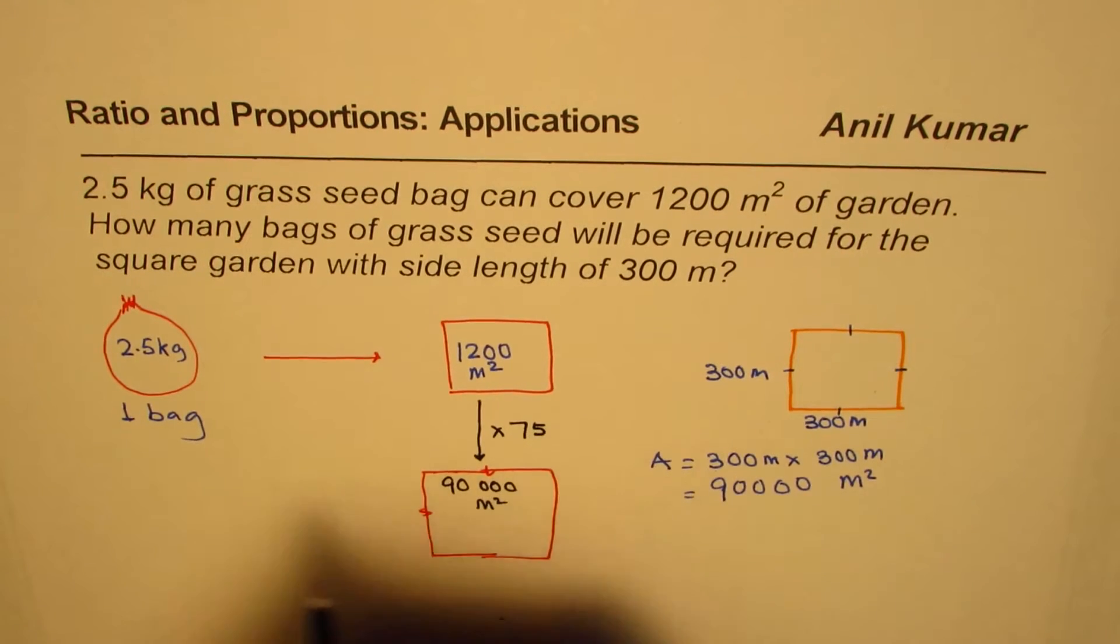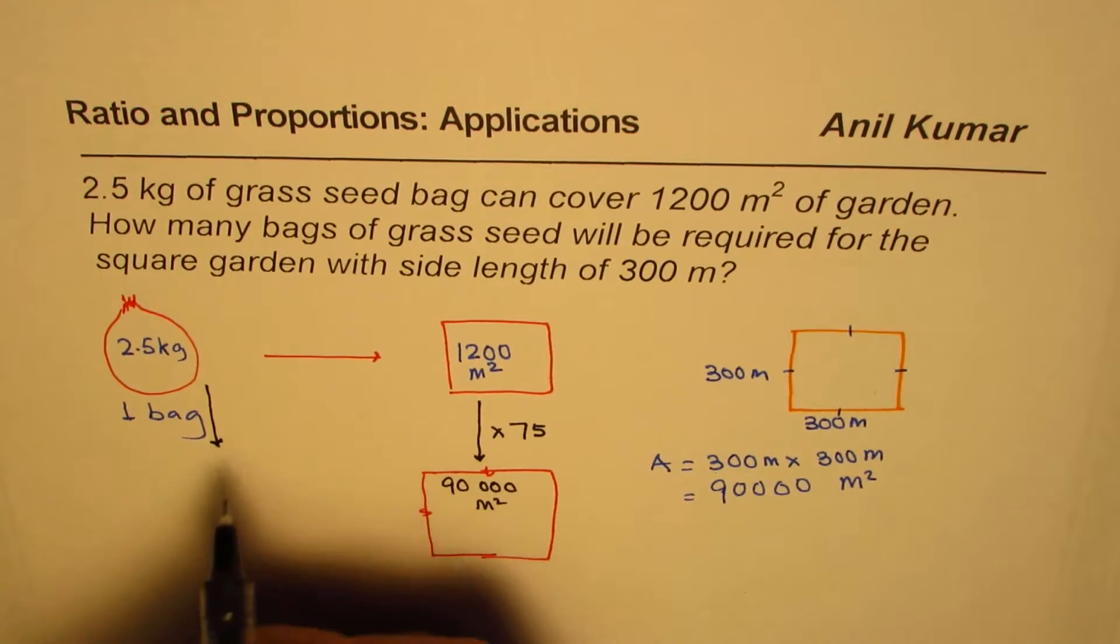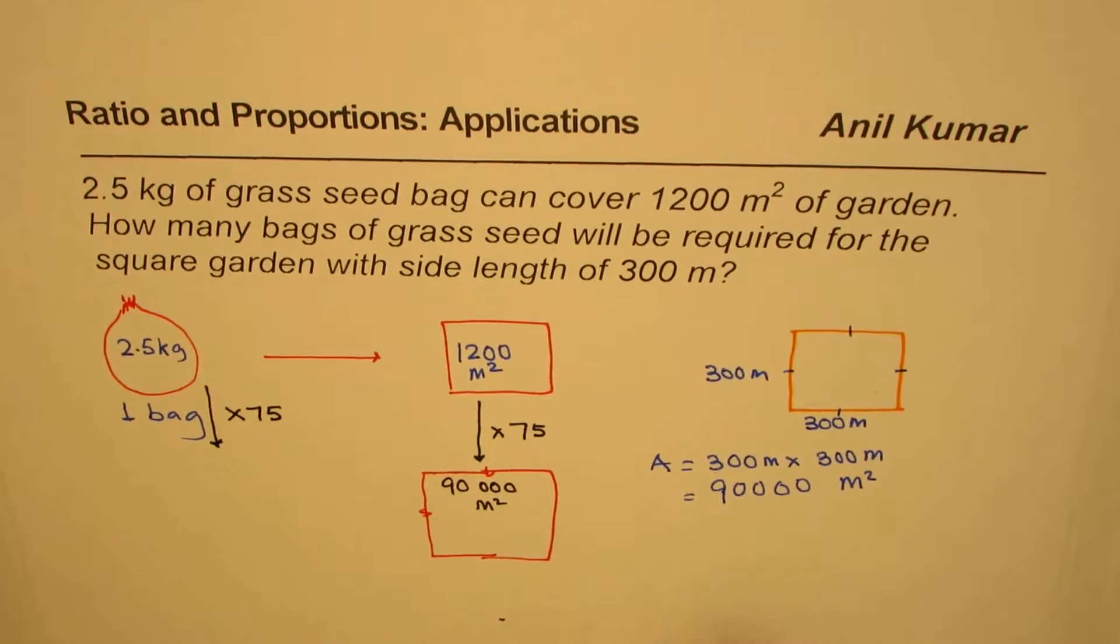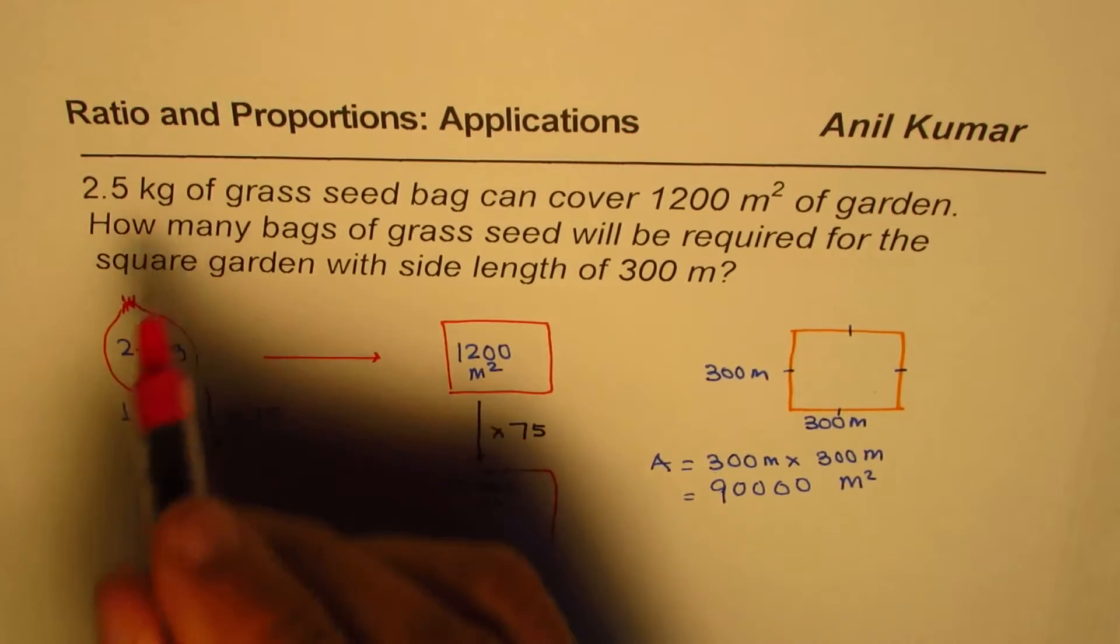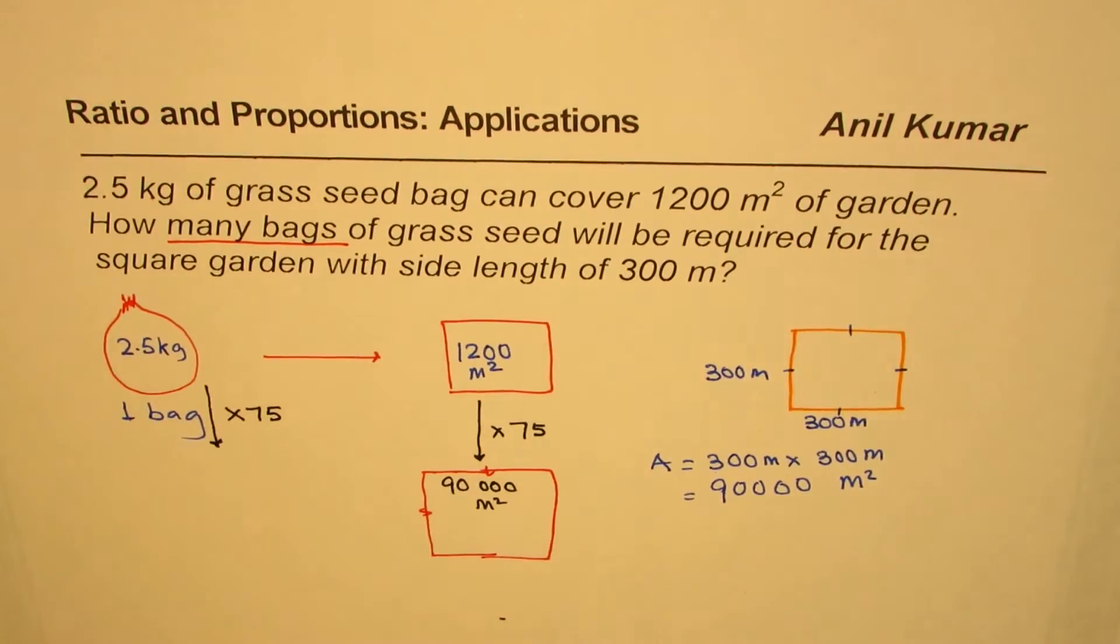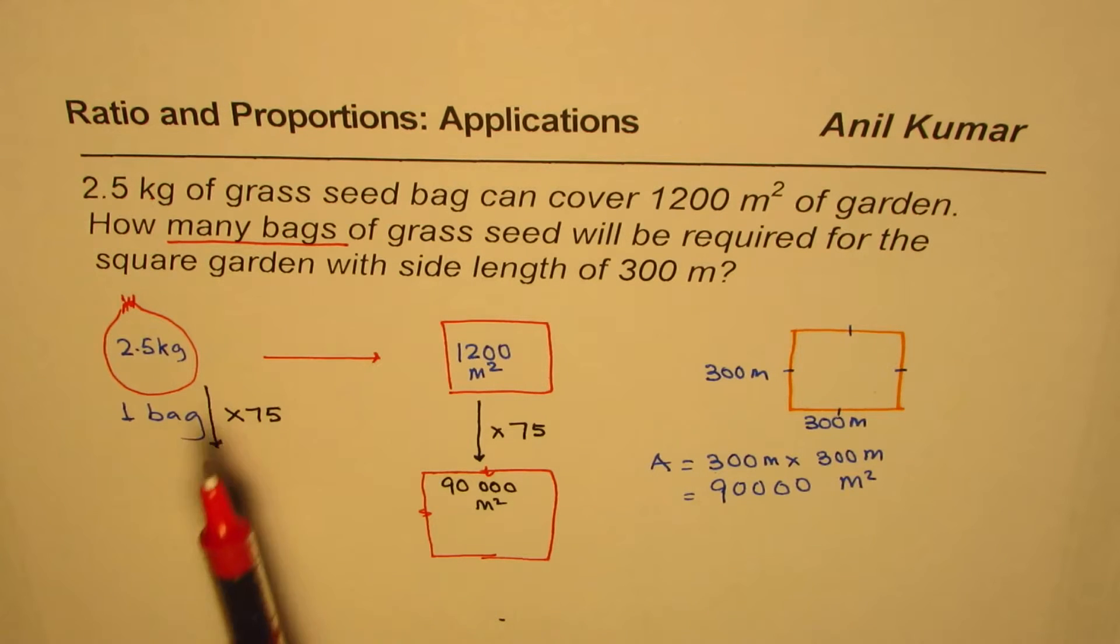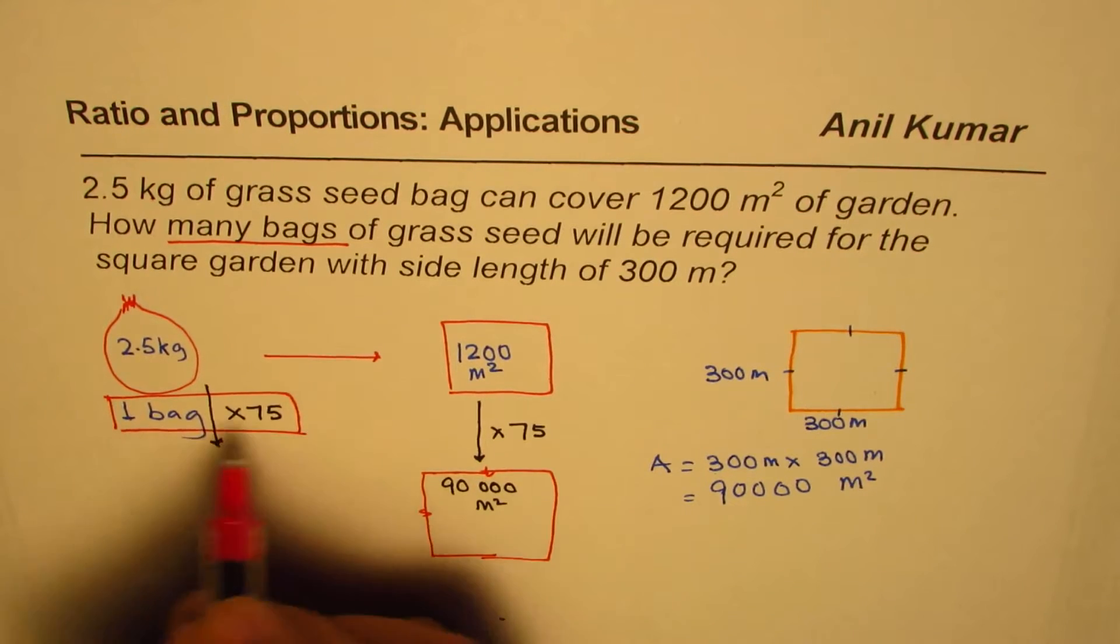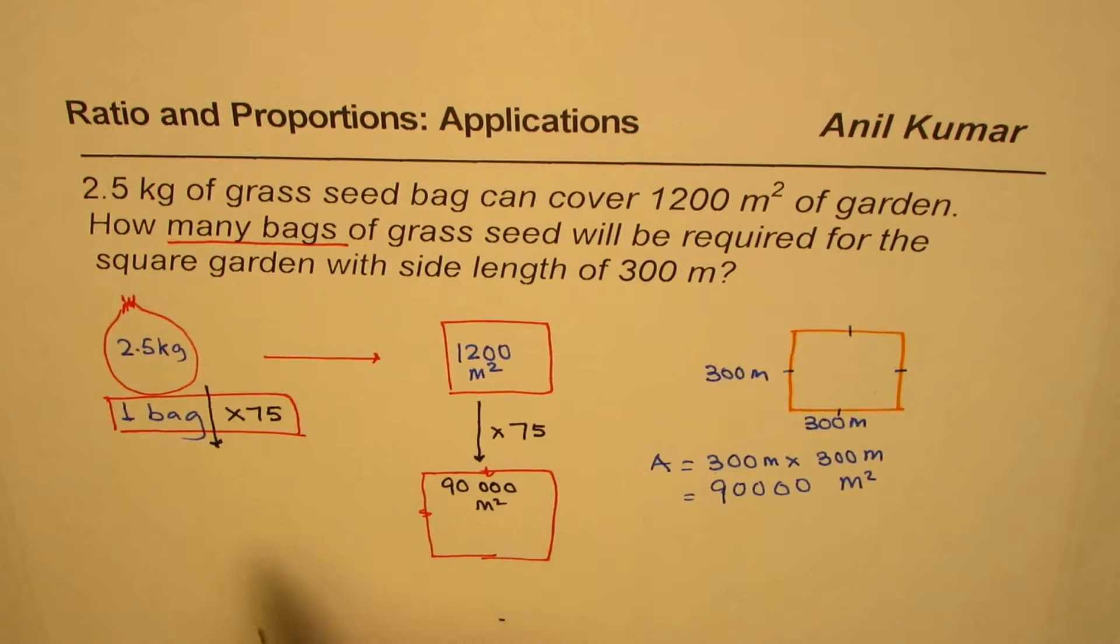And therefore, same ratio of proportion, we have to multiply this by 75. Now look at the question—it says how many bags. Do you see, we are not talking about kg. It is important. So at times you may get confused, you may multiply 2.5 by 75 and get a wrong result.